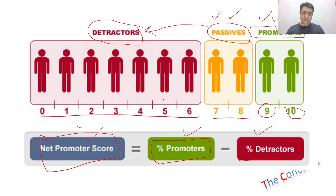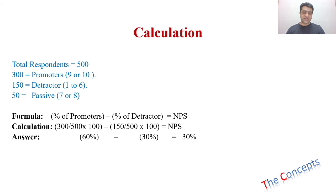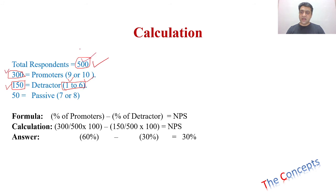Let's look at this calculation with an example. Suppose we have collected data from 500 people — that is our total number of respondents. 9 or 10 was answered by 300 people, making them our promoters. 150 people answered from 1 to 6, making them our detractors. The remaining 50 customers answered 7 or 8, making them passive customers.